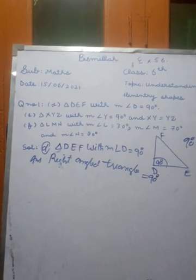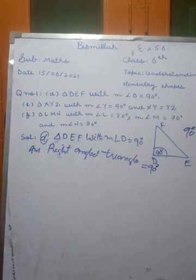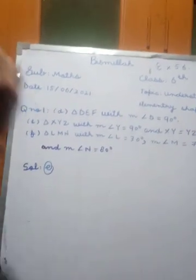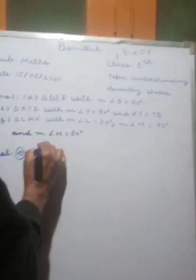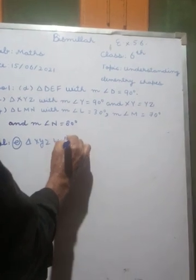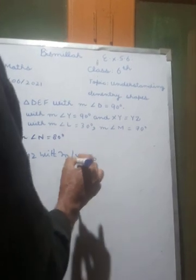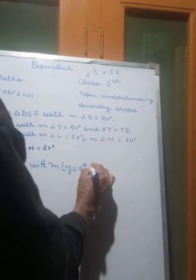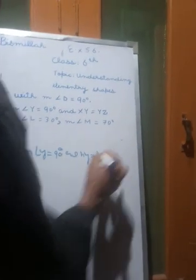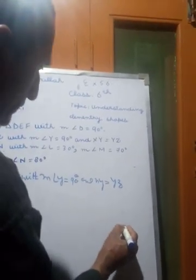A right angle is close to 90 degrees. Triangle XYZ, with major angle Y equal to 90 degrees, and XY is equal to YZ.